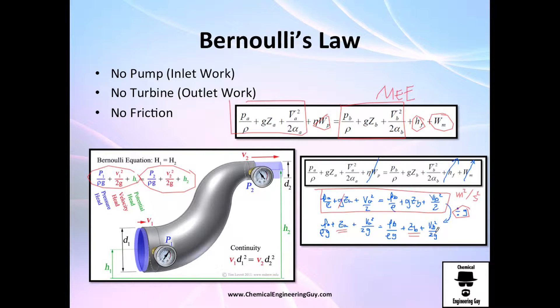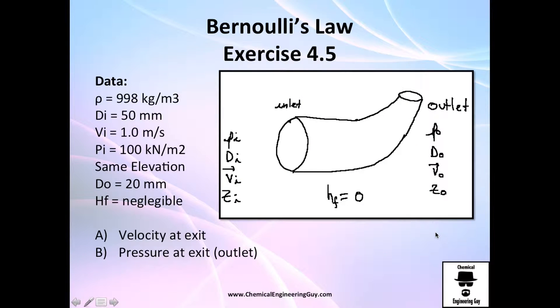That's Bernoulli's law. Now let's do an example or exercise using Bernoulli's law. We've got density of the fluid is 998 kg/m³, the diameter at the inlet is 50 millimeters, we've got the velocity going in, and the pressure going in. They tell you it's the same elevation, so even though it seems it's going up, z1 and z0 will be the same.